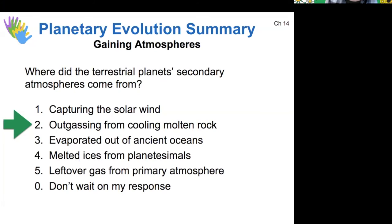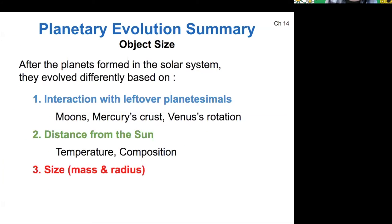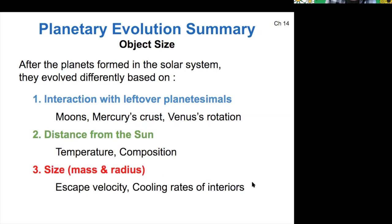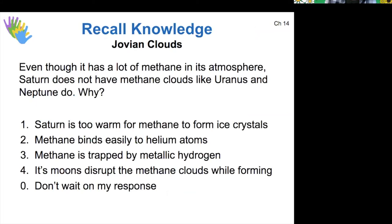All of this is governed by a planet's mass and its radius. The escape velocity is set by the mass and radius, and the cooling rate of the interior of the planet is also set by that. Even though Saturn has a lot of methane in its atmosphere, it doesn't have methane clouds, whereas Uranus and Neptune do. Why is that the case?